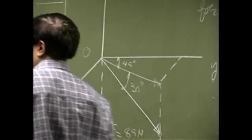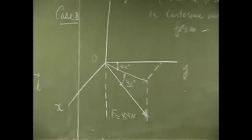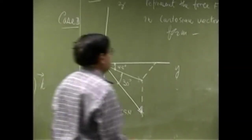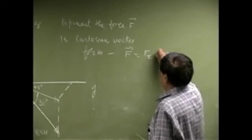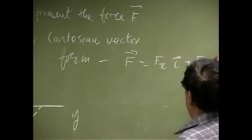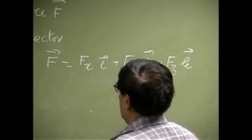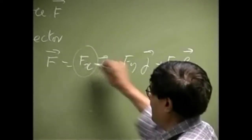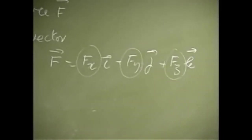Now, this whole thing is similar to case 2, so first you have to identify the components. Because I am going to write the force as a Cartesian vector, the same equation is F equals Fx·I plus Fy·J plus Fz·K. The same equation — we are still looking for the magnitudes of the x, y, and z components.